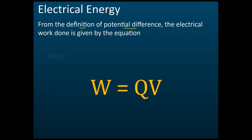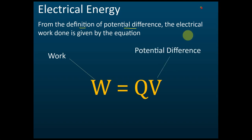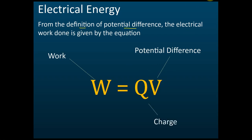So W = QV, where W is work done, V is the potential difference, and Q is the charge. This is the electrical work done.